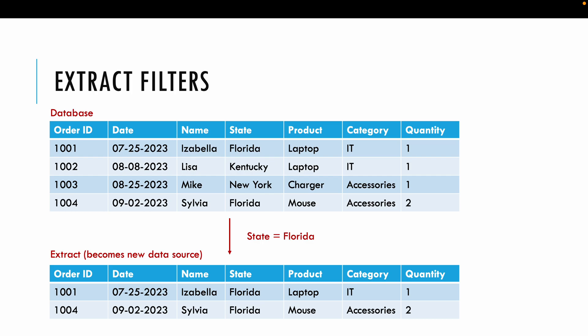Now let's start with understanding extract filters. An extract filter gets applied when you create an extract. If you don't know what an extract is, just go and check out my video on live and extract connections. When you create an extract, you have the ability to further limit the number of records based on a specific field.